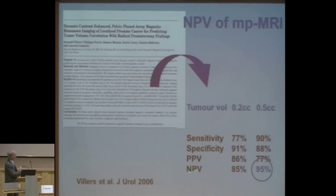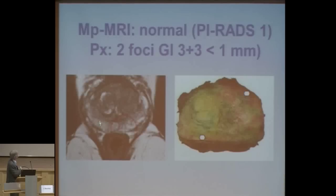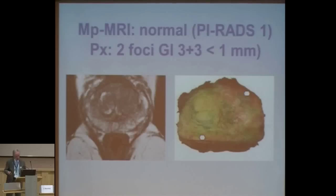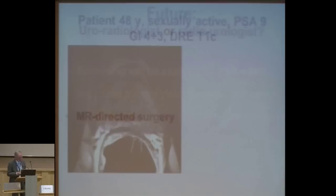The negative predictive value of DCE MRI already in 2006 was very high. For example, a patient with PI-RADS 1 classification — absolutely normal, no focal lesion, no diffusion abnormalities. Nonetheless, this patient had a needle core biopsy yielding less than 1% Gleason 3+3. He heard the word 'cancer' and asked for a prostatectomy, which found only two tiny foci. We will miss insignificant cancer — that's the weakness, but also the strength of MRI. High negative predictive value.